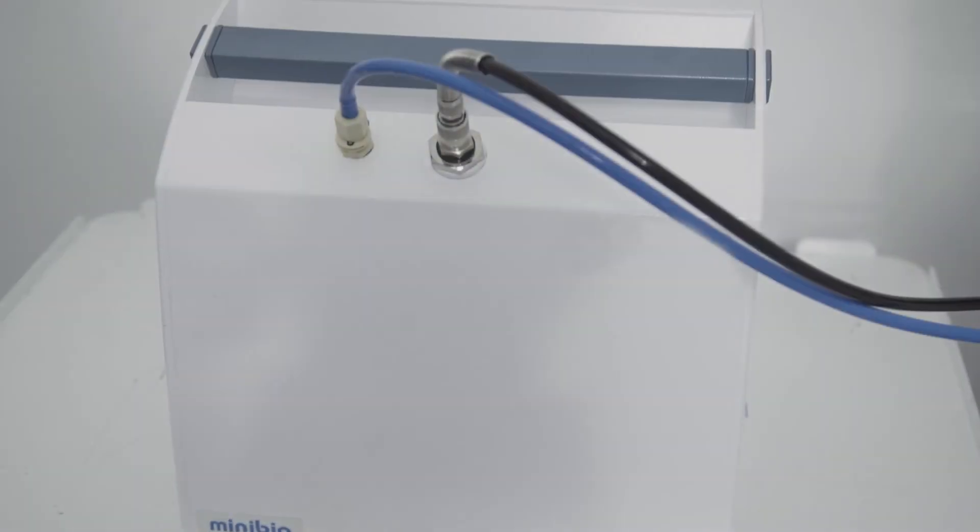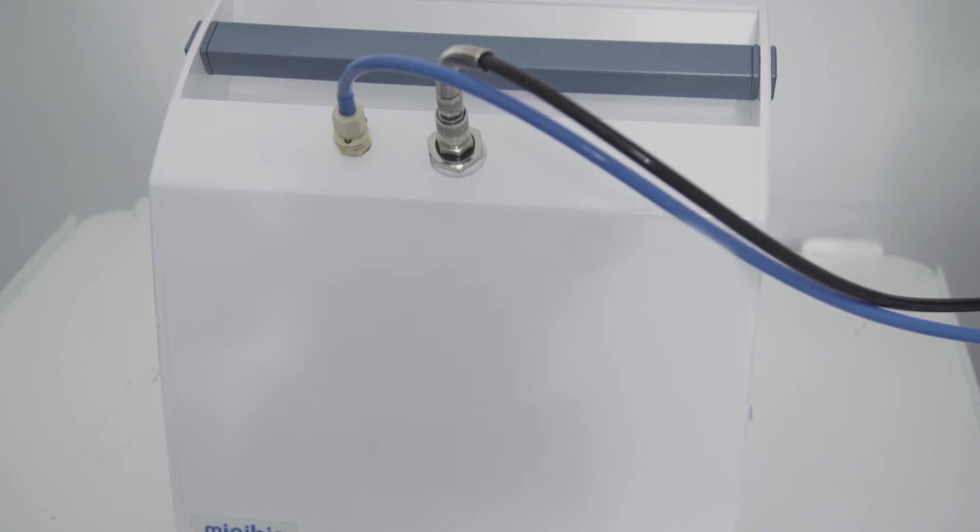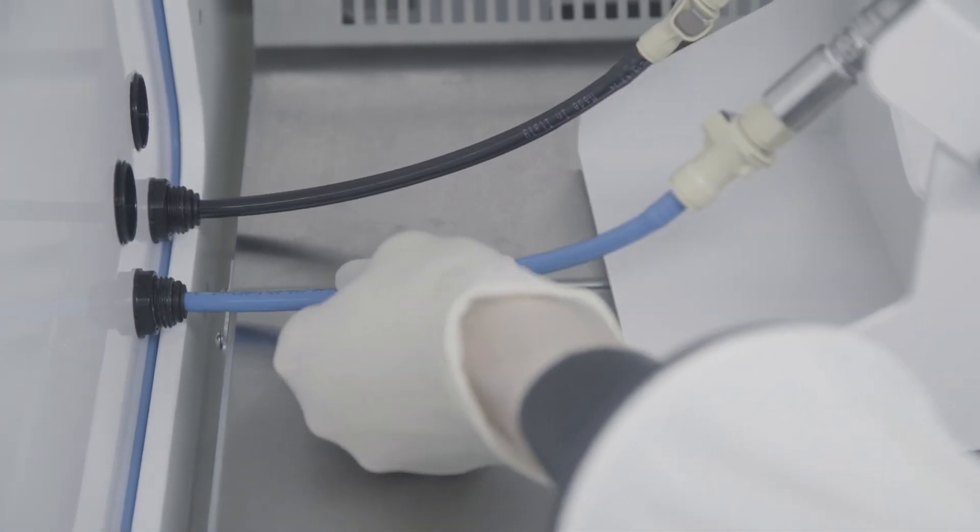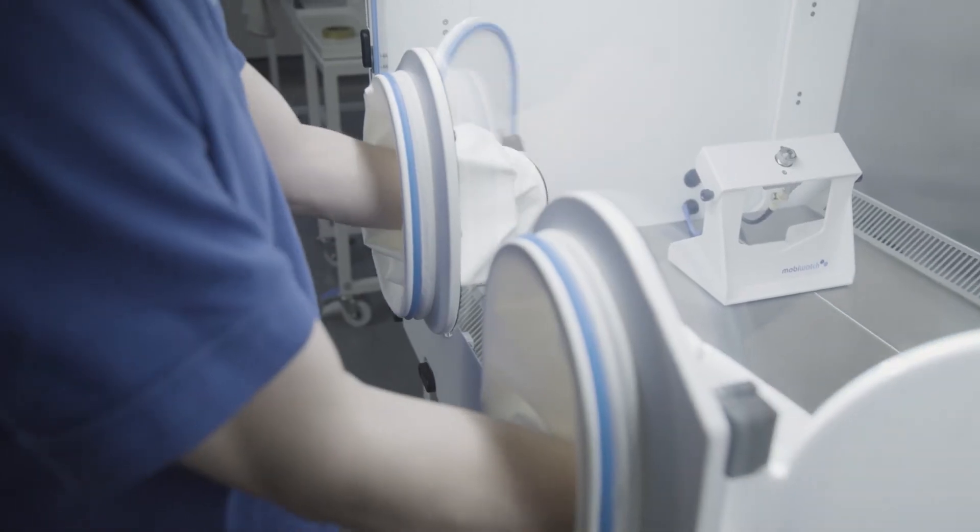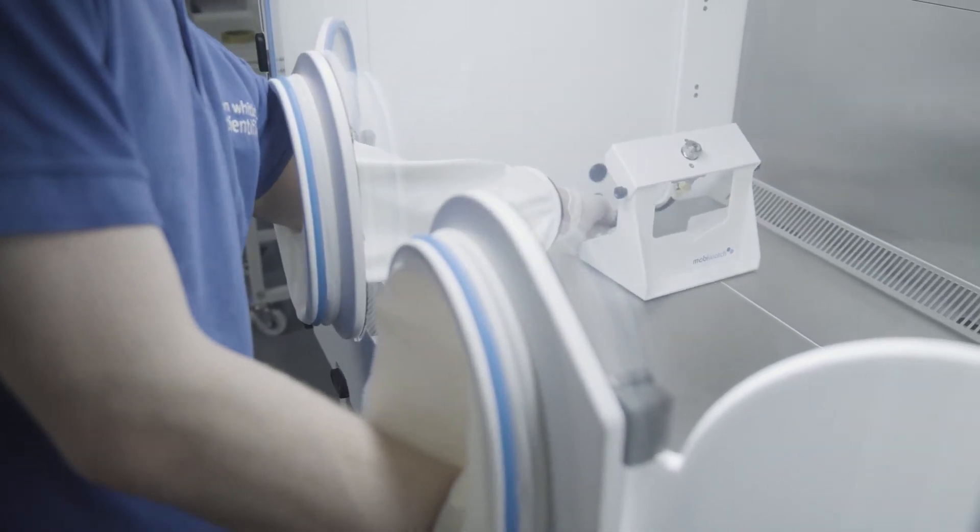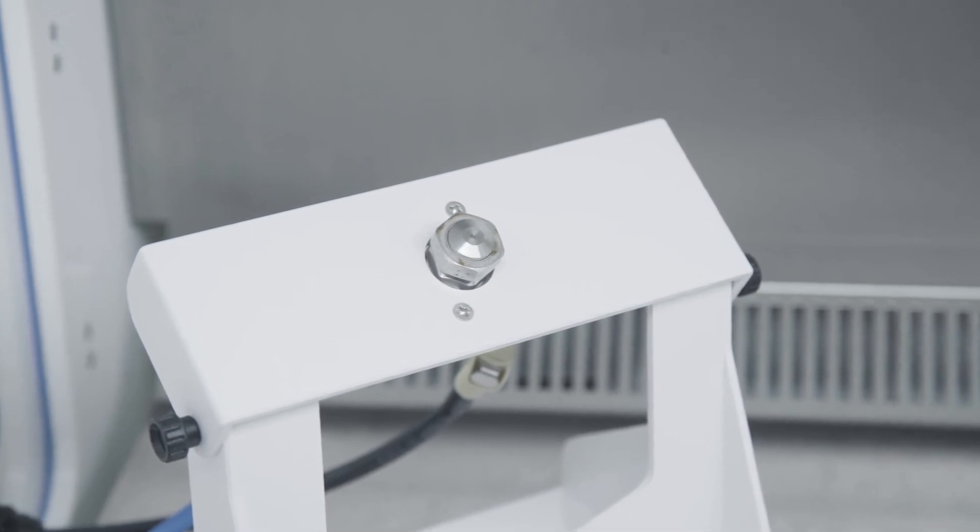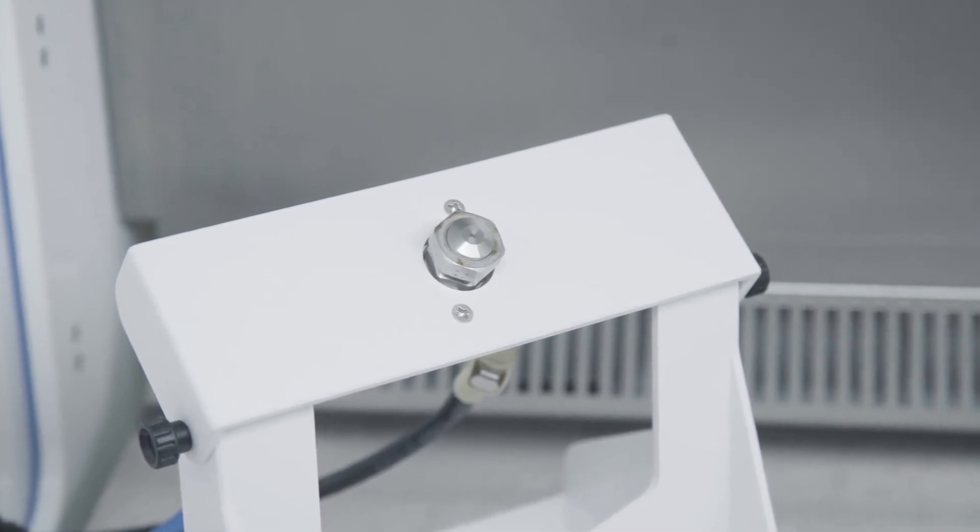Hydrogen peroxide fogging can be used to decontaminate the Whitley H135 GMP Hypoxie Station. We've carefully tested and selected the equipment and method best suited to this specific workstation, and the complete solution is available to purchase as an option.